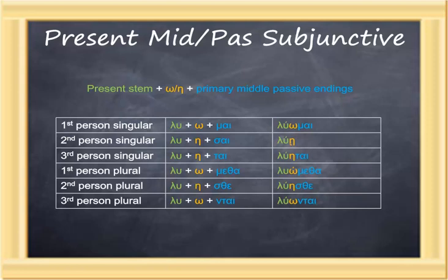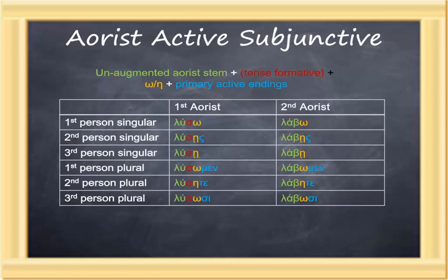The aorist active subjunctives are formed by using an unaugmented aorist active stem, a tense formative in the case of the first aorist but none in the case of the second aorist, plus the lengthened vowel and the primary active endings. So the first aorist is λύσω, which looks like a future. However, in the other forms, the lengthened vowel clearly indicates its subjunctive. In the second aorist, the form is identical to the present, except for the use of an aorist stem — so λάβω is the second aorist subjunctive, first person singular.